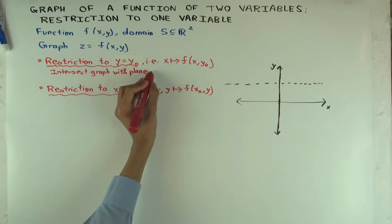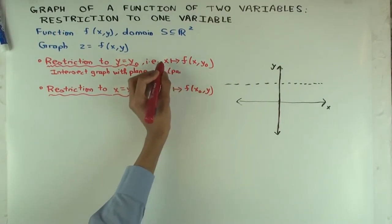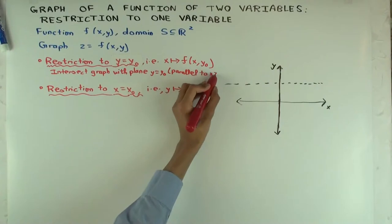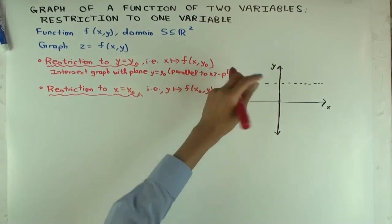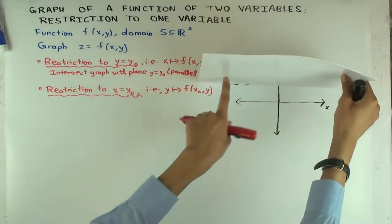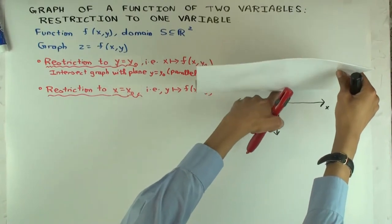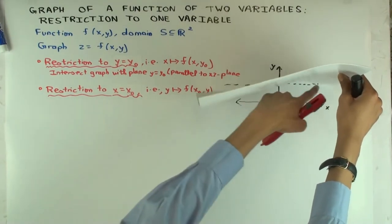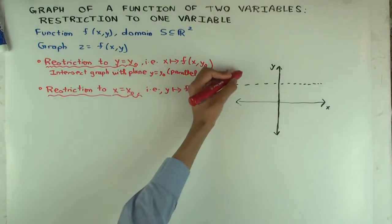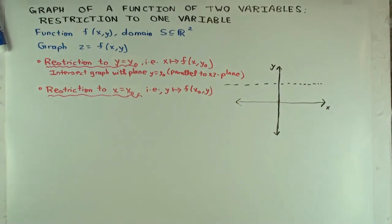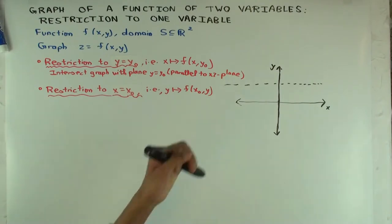That intersection is just the graph of the function that sends x to f of x, y0 — where you set this point as the origin. You'll have a plane like this, with the z-axis serving as the function axis and the x-axis parallel direction as the input axis. You get a picture of a graph and can interpret it as a graph of a function of one variable. Now, what about the other case — restriction to x equals x0?